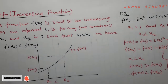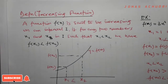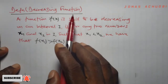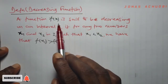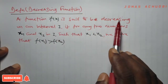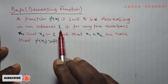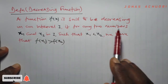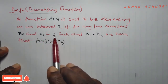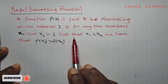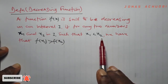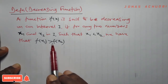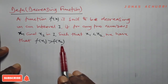Let's look at what a decreasing function is. Definition: decreasing function. A function f of x is said to be decreasing on an interval i if for any two numbers x1 and x2 in the interval i, such that x1 is less than x2, we have that f of x1 is greater than f of x2.